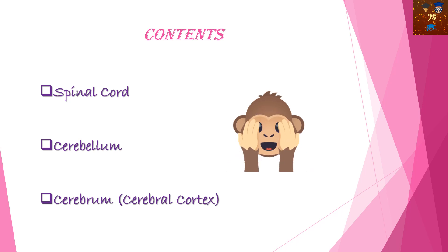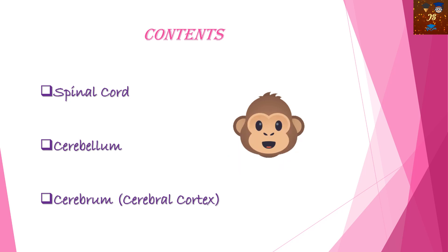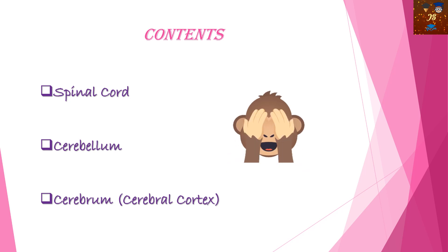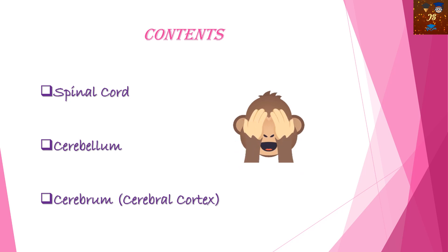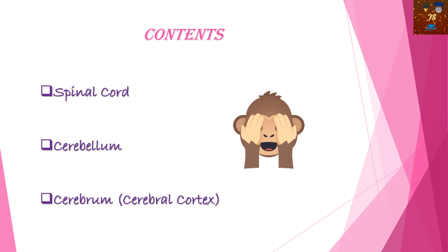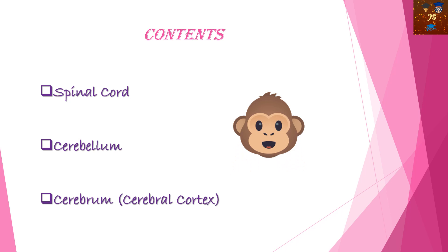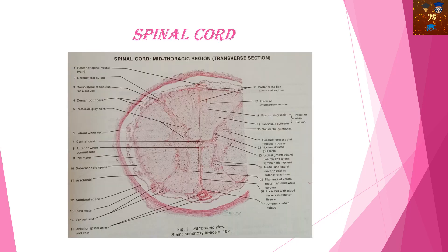Regarding the contents of the nervous system, I am going to discuss three particular parts which very commonly come in the examination: number one is the spinal cord, number two is the cerebellum, and number three is the cerebrum or cerebral cortex. This is the section of the spinal cord as it appears under the high power or low power objective of the microscope.